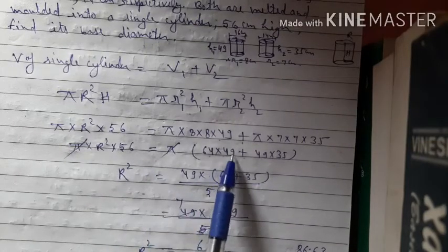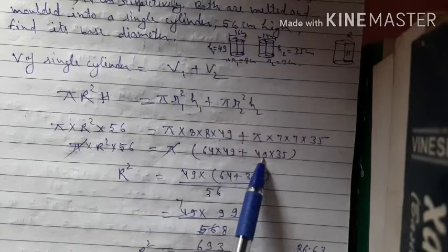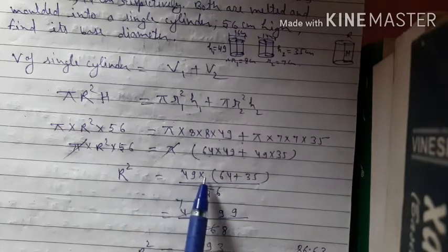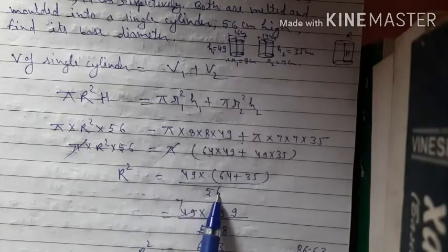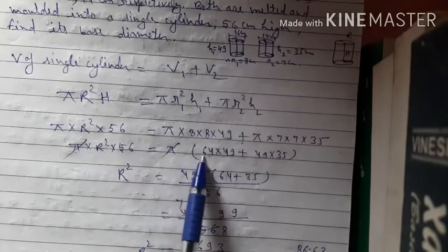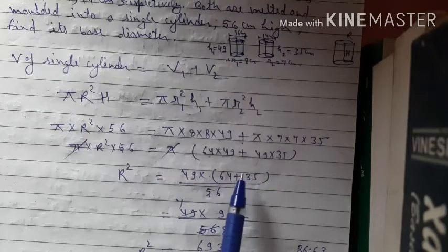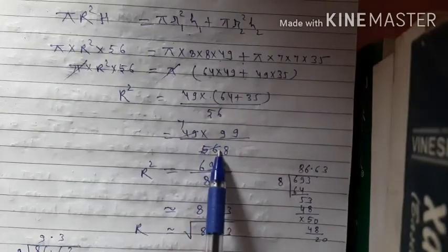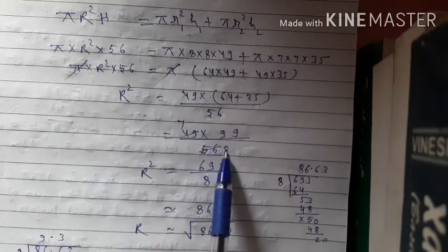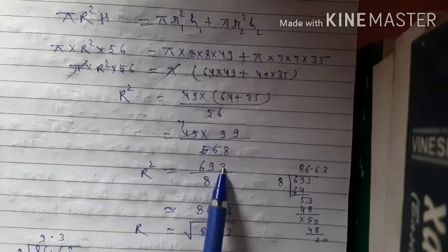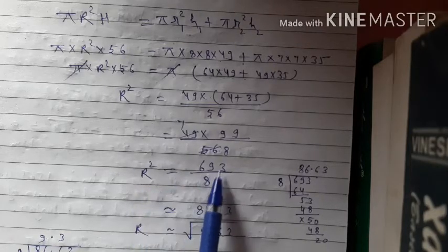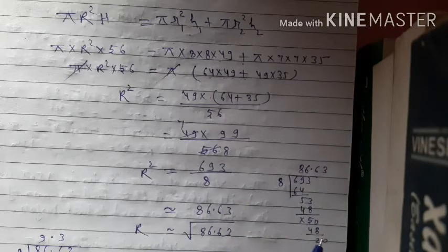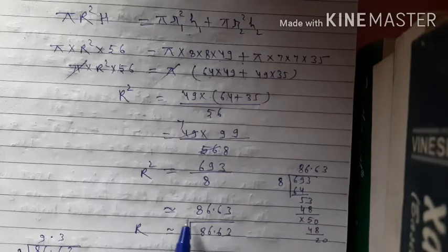So R² = 49 × (64 + 35) / 56 = 49 × 99 / 56. Simplifying by 7: 49/7 = 7, 56/7 = 8, giving 7 × 99/8 = 693/8. Dividing: R² ≈ 86.63 (approximate, since it doesn't divide exactly).